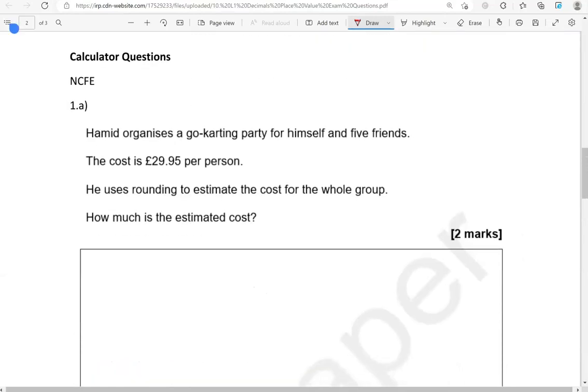We're moving now to the calculator questions. Hamid organises a go-karting party for himself and five friends. The cost is £29.95 per person. He uses rounding to estimate the cost for the whole group. How much is the estimated cost?